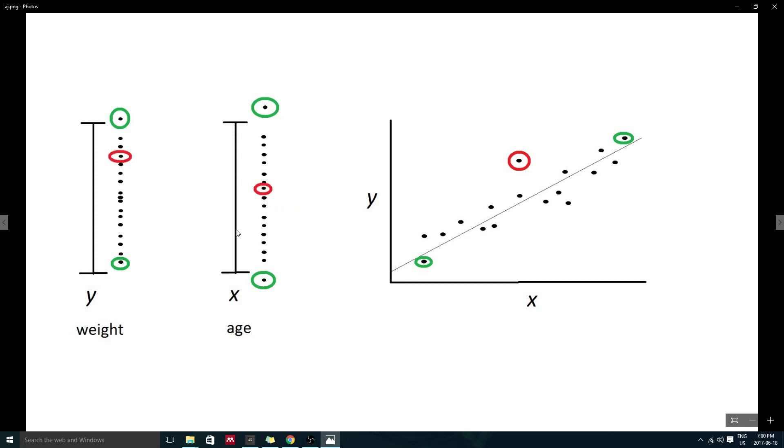So, when we re-evaluate our data for outliers with the consideration of the relationship between variables, some outliers cease to be outliers while others become outliers.